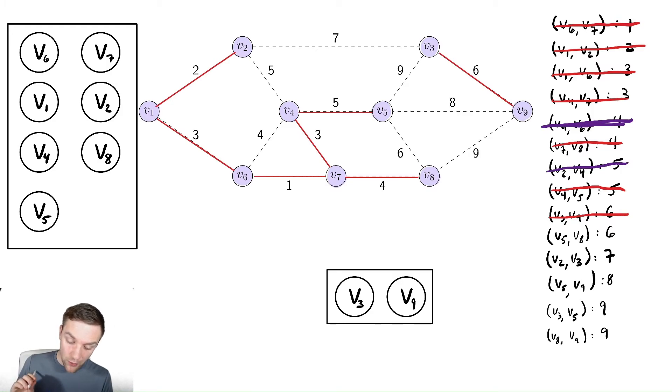But now we need to check the remaining edges. Notice that v5, v8, v5 and v8 are both already in, and they would create a cycle over here in this sort of parallelogram shape. So we do not add v5, v8.